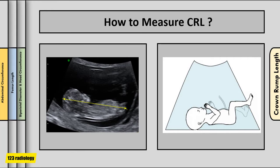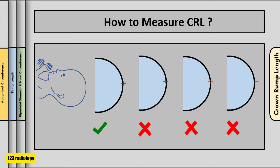To measure crown rump length, obtain a mid-sagittal section of the fetus. The fetus should be horizontal at 90 degrees to the angle of insonation, and in a neutral position — not hyperextended or flexed. The image should fill at least 30% of the monitor screen. Place the intersection of the calipers on the outer borders of the head and rump, and measure the maximum length from cranium to caudal rump as a straight line. Placing the calipers on the inner borders is incorrect and should be avoided.